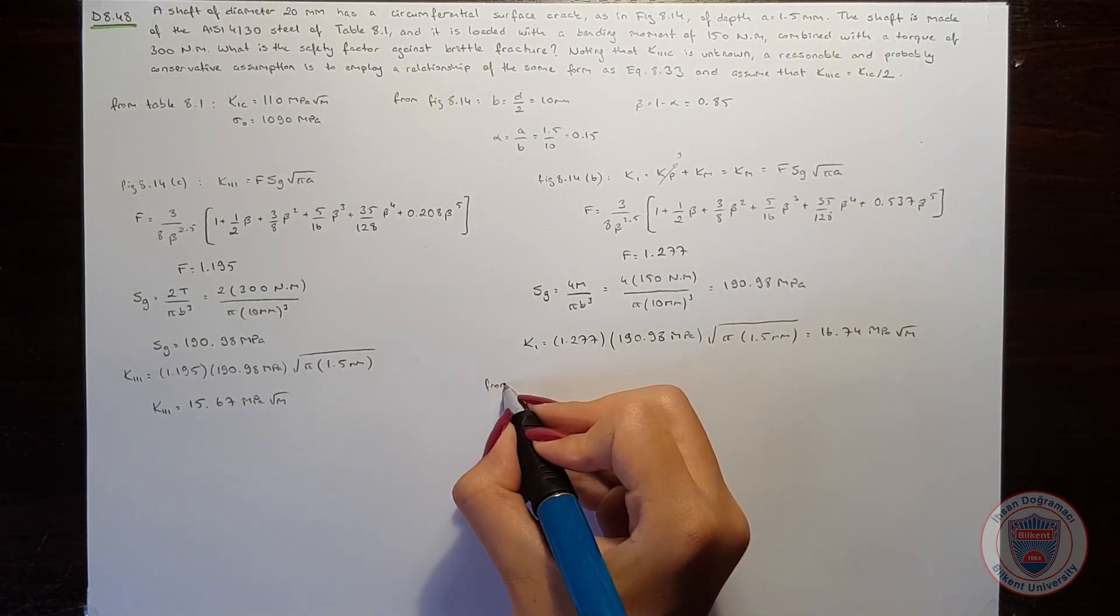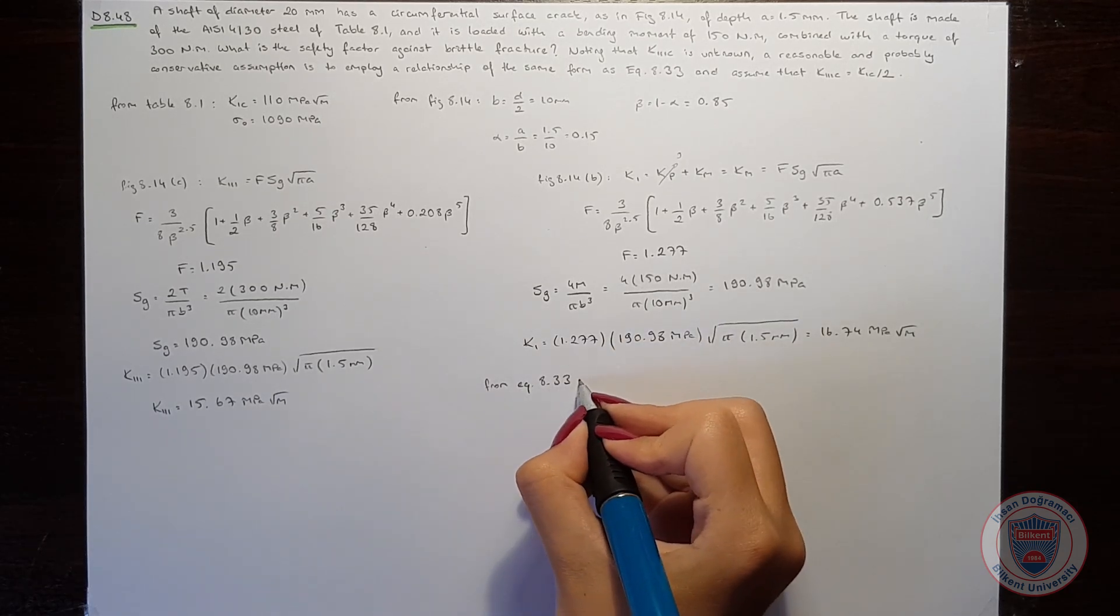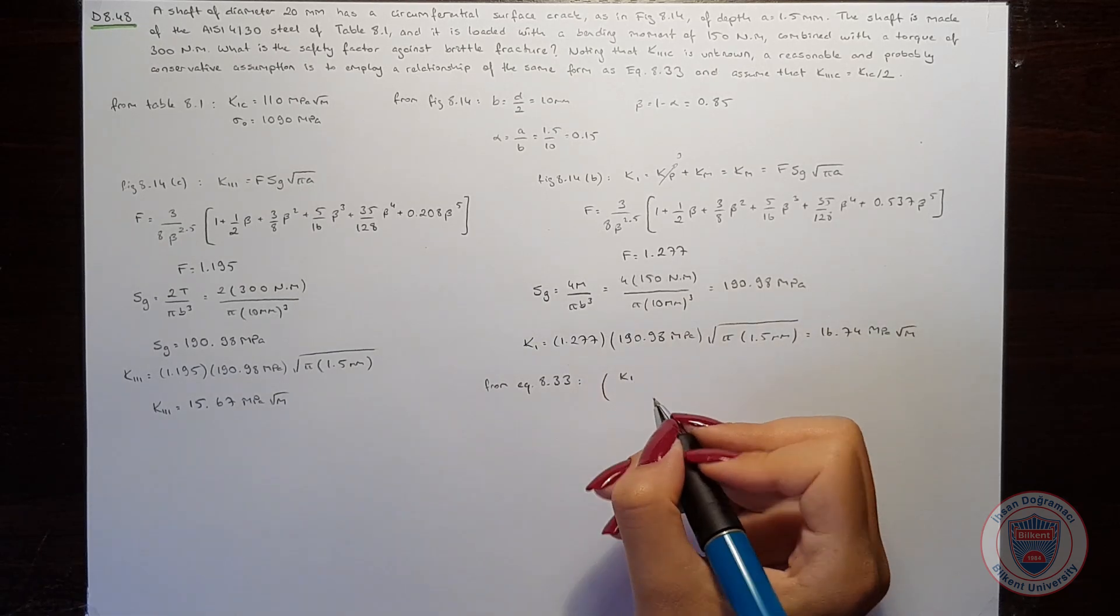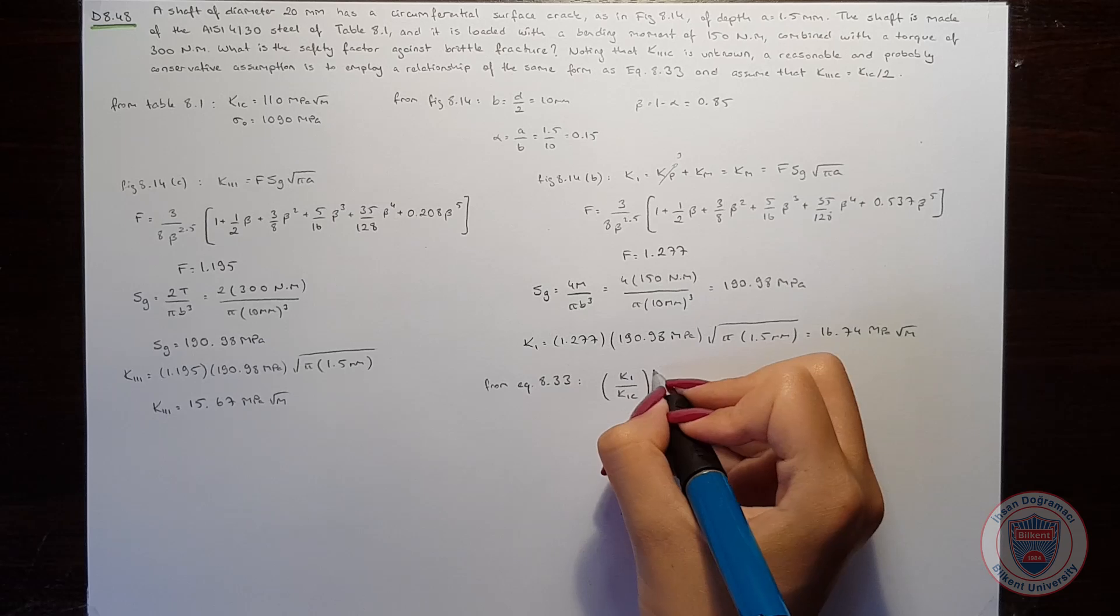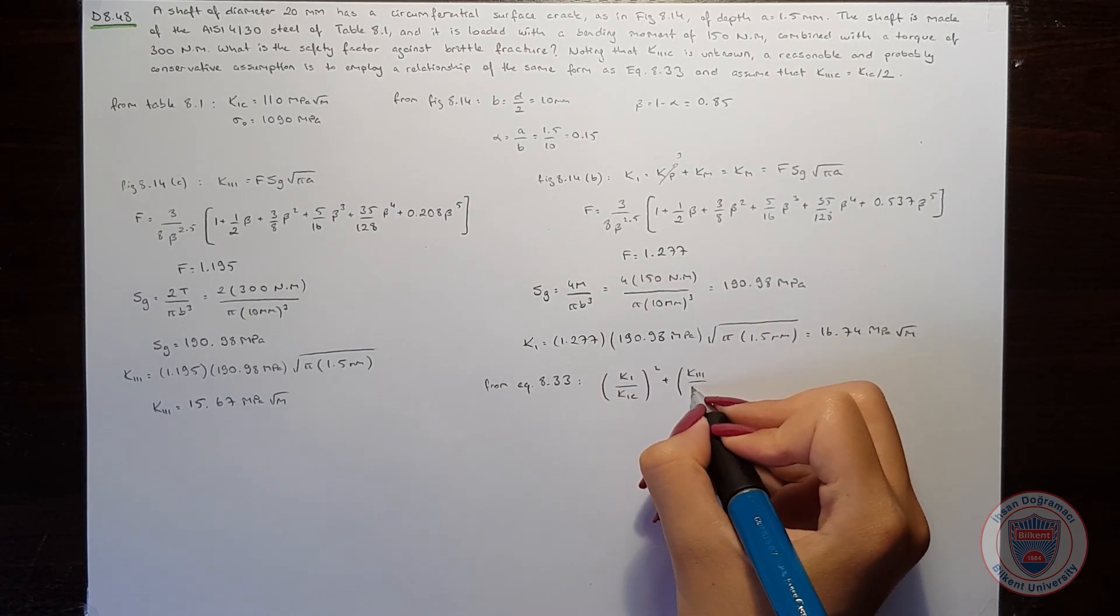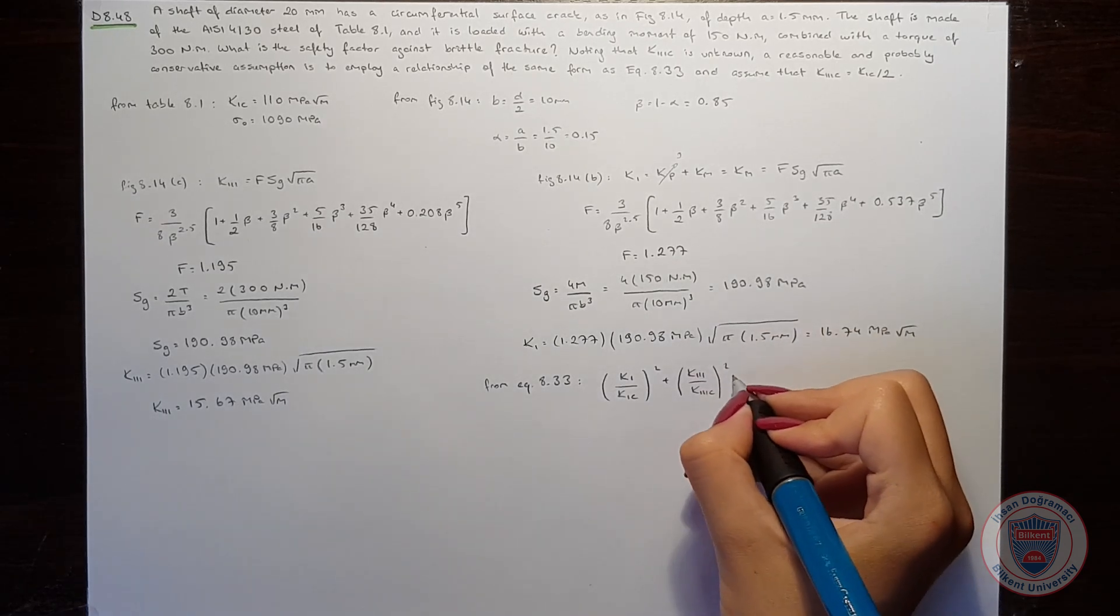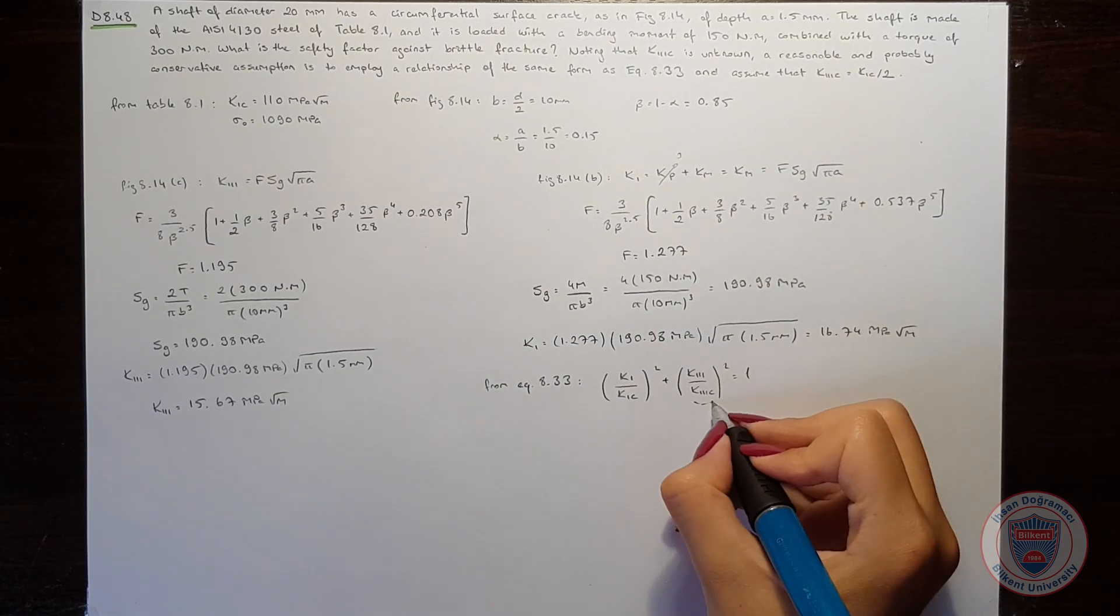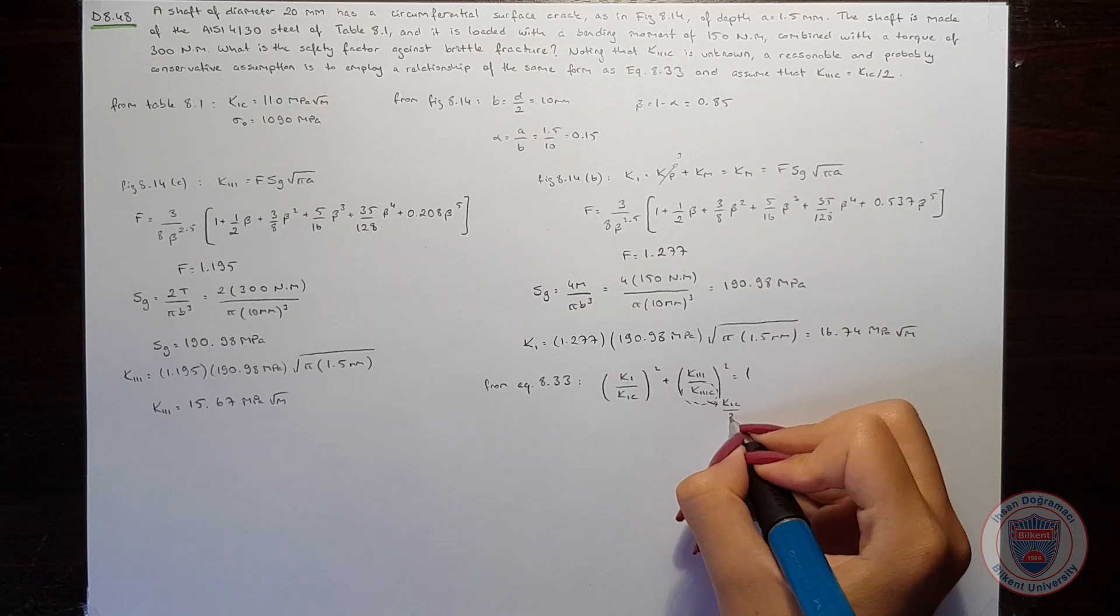From Equation 8.33, we have K1 over K1C squared plus K3 over K3C squared equals 1. We assumed K3C equals K1C over 2.